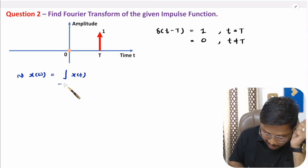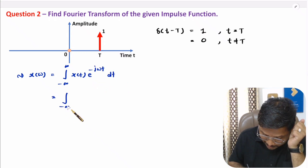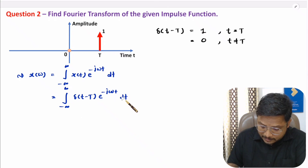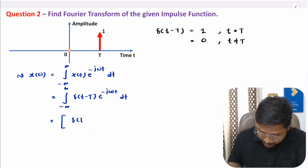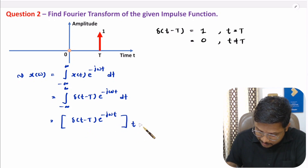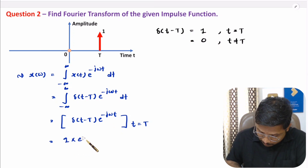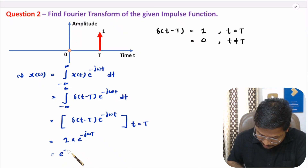The Fourier transform X of omega of signal x(t) is the integral from minus infinity to plus infinity of x(t) times e to the power minus j omega t dt. Here x(t) is delta of t minus capital T, so we have delta of t minus capital T times e to the power minus j omega t dt. Again, we do not need to integrate — the function has value only at t equals capital T. So we place t equals capital T: delta of t minus capital T equals unity, and e to the power minus j omega t with t substituted as capital T gives e to the power minus j omega capital T.